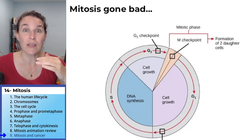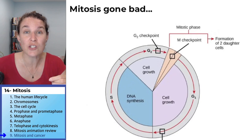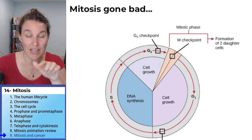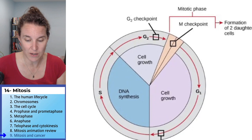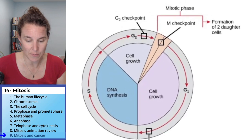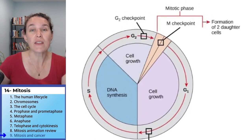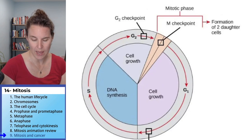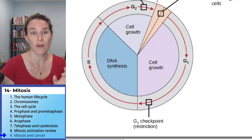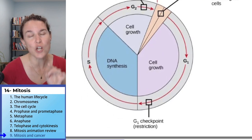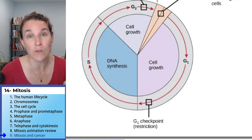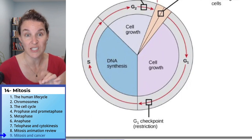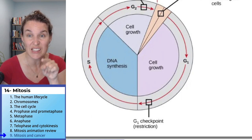There are actually checkpoints in the cell cycle, and this visual right here is showing you where they are. There are checkpoints that say, okay, are you serious about going through mitosis? And is everything in line?